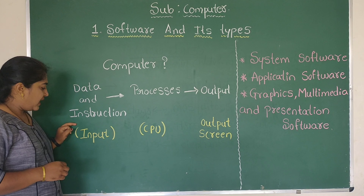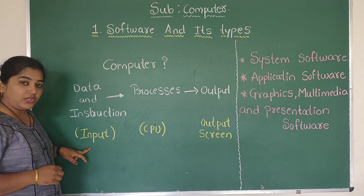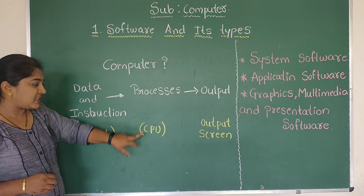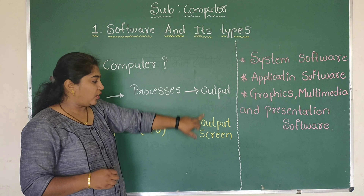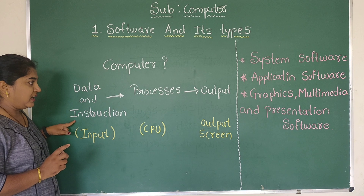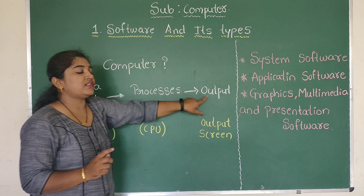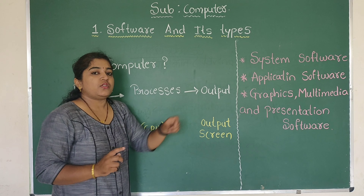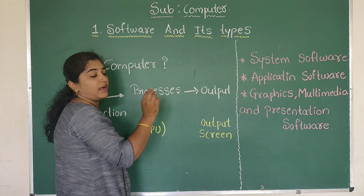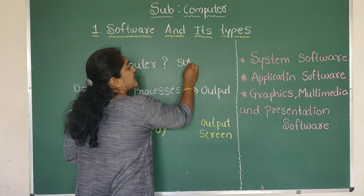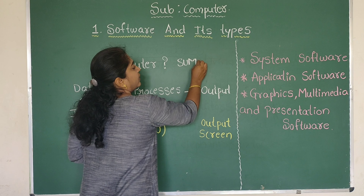What is a computer? Computer is an electronic device which accepts data and instructions as input. It processes them in the CPU and gives a desired output on the screen.